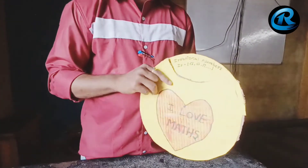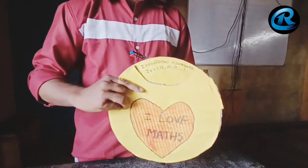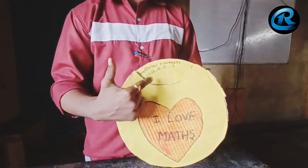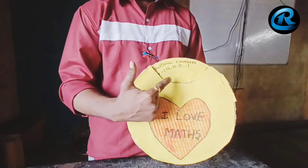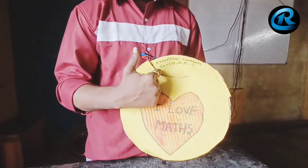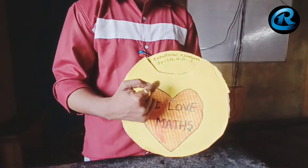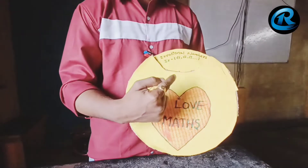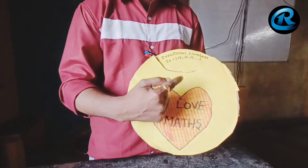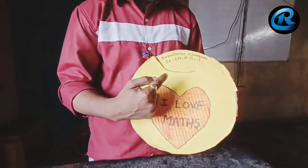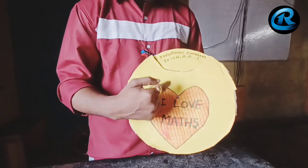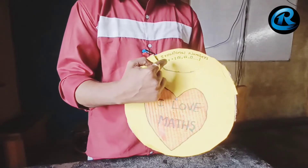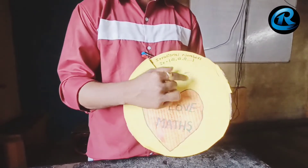Next, we get irrational numbers. The numbers which cannot be expressed in the form of p by q are called irrational numbers. Normally, non-perfect square root numbers, non-perfect cube root numbers, and pi values are irrational numbers, which are denoted by Q'.